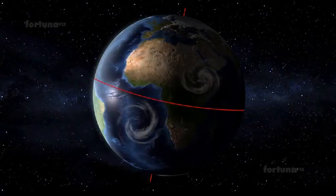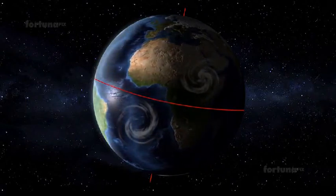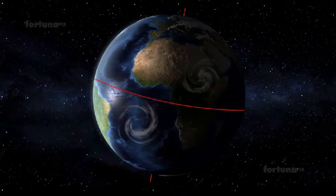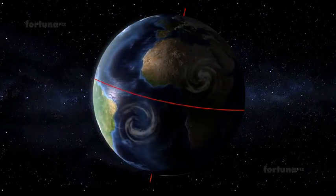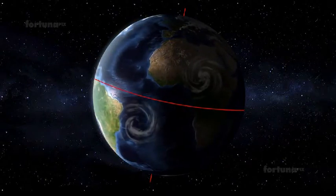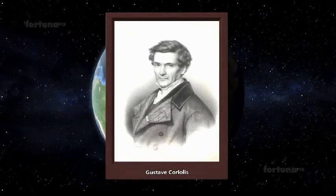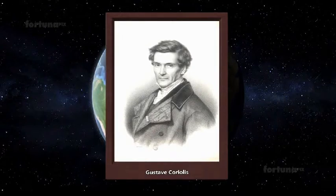The Coriolis effect, also called the Coriolis force, is the apparent deflection of a moving body's path near Earth's surface. It is named after the French mathematician Gustave Coriolis, who explained this force in 1835.